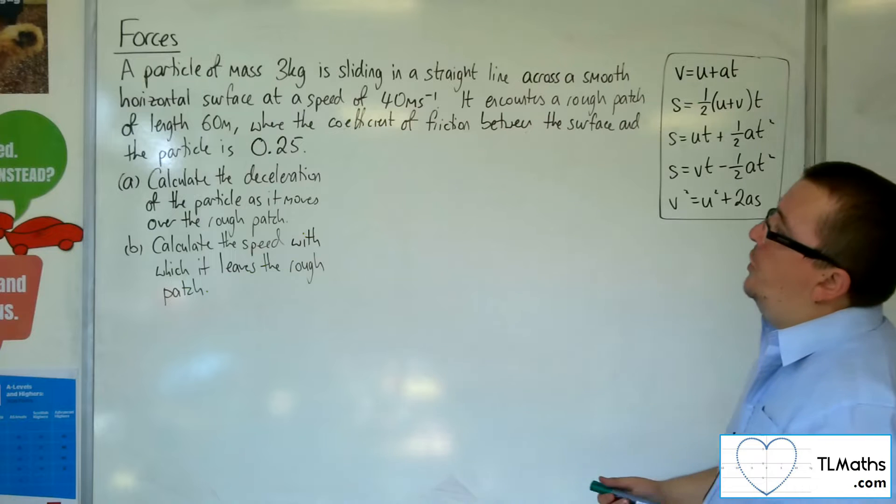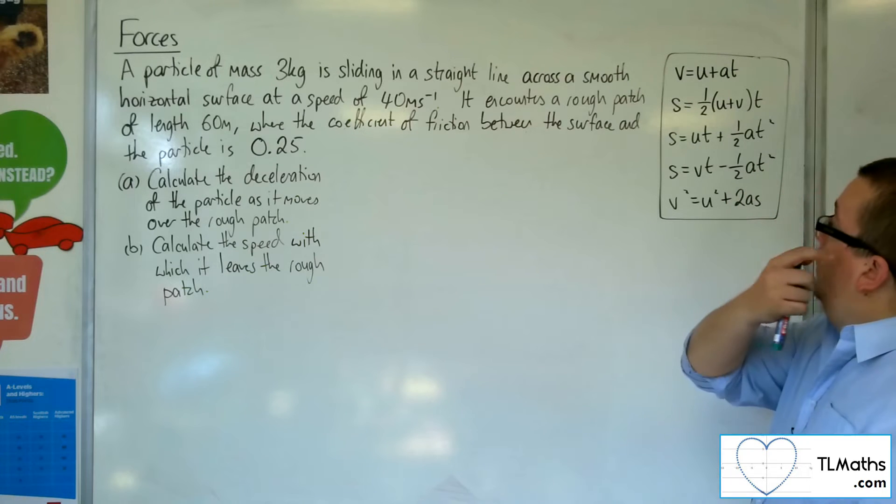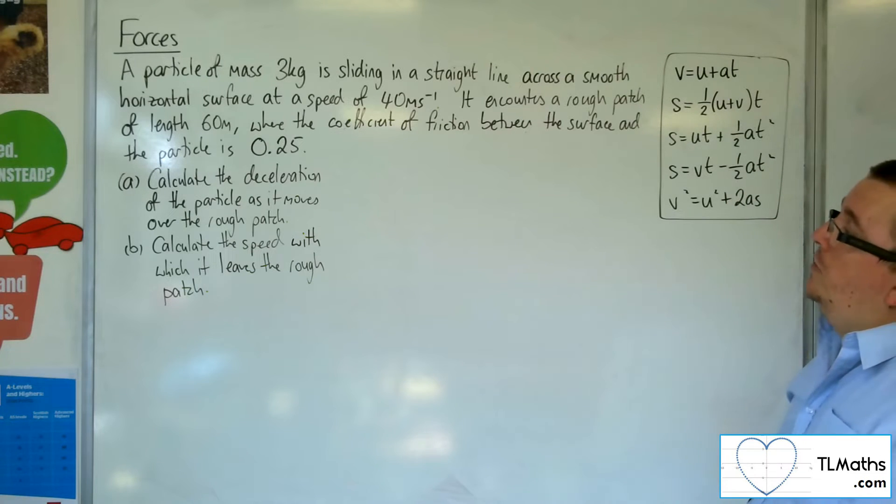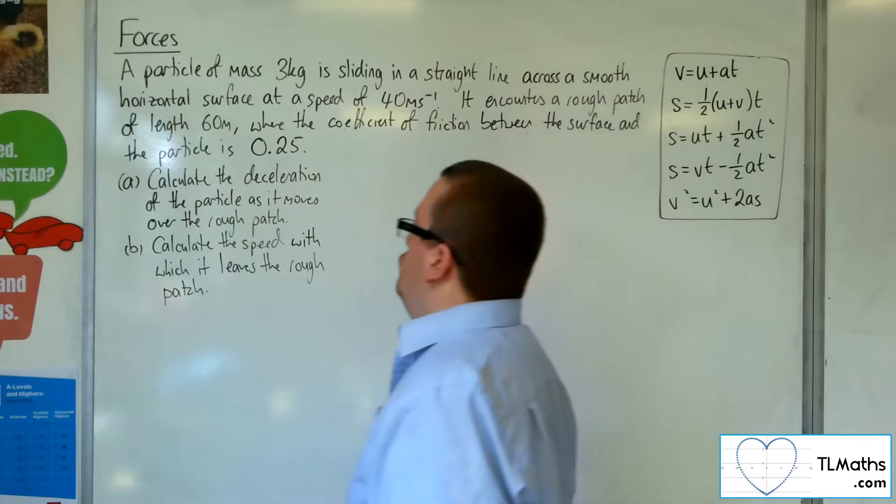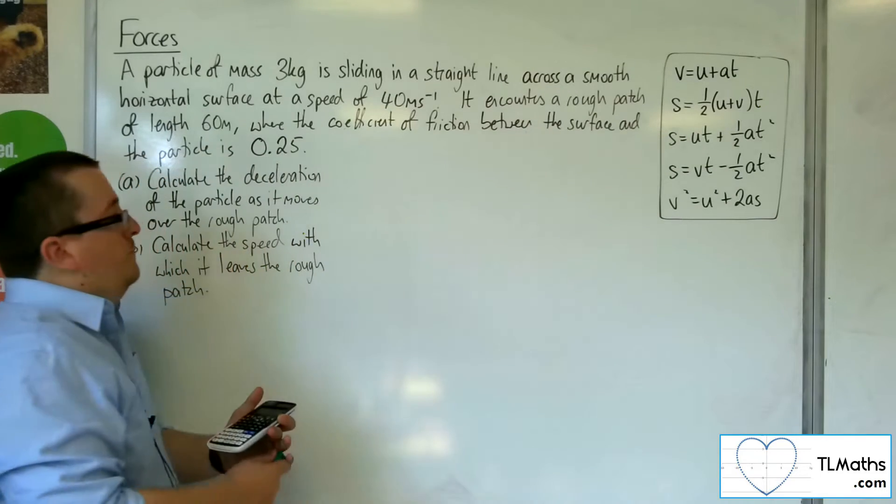It encounters a rough patch of length 60 metres, where the coefficient of friction between the surface and the particle is 0.25. Calculate the deceleration of the particle as it moves over the rough patch.